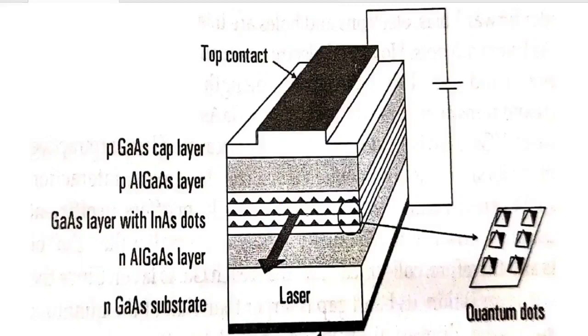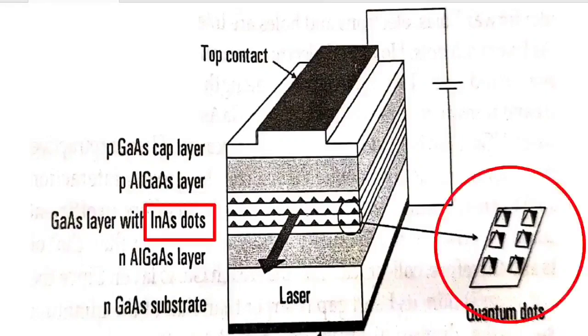And the holes and electrons recombine in the dot under a small band gap. Based on the recombination the photons are generated, and there will be amplification and the production of laser. The emission wavelength corresponds to the interband transition of the indium arsenide dots.